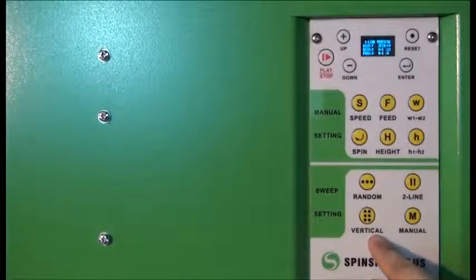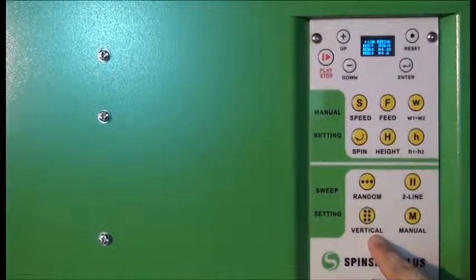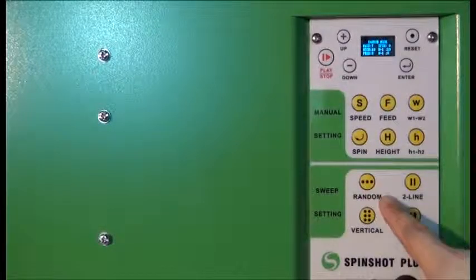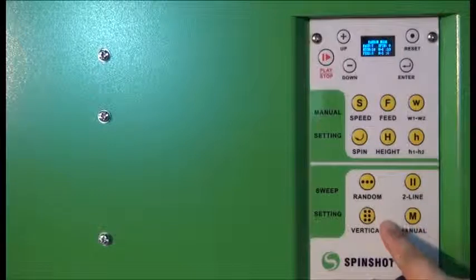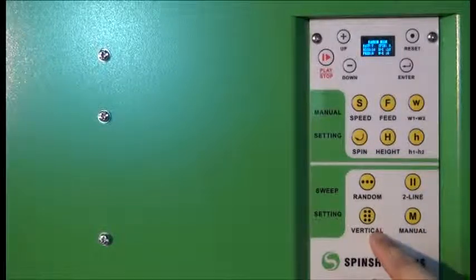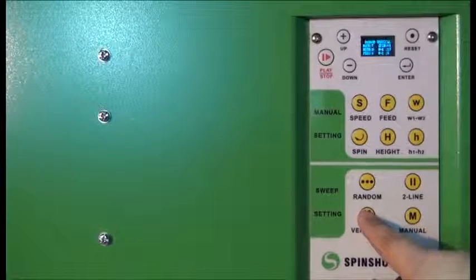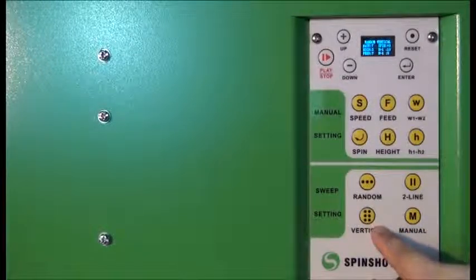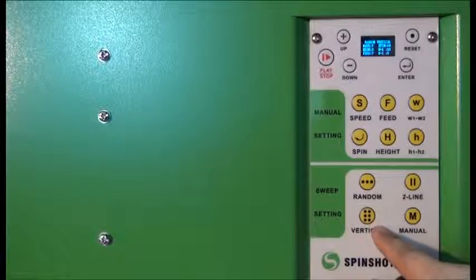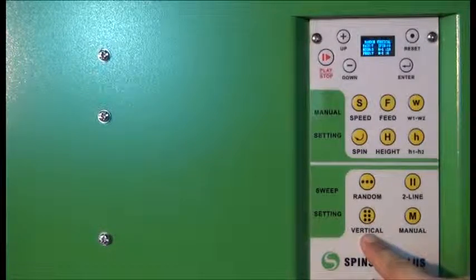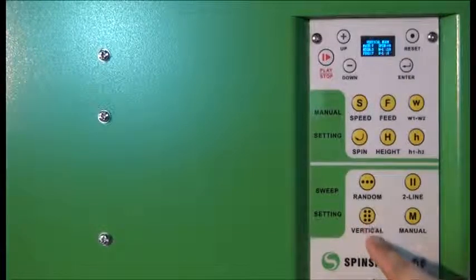If you want to go back to the random mode, you press the random here. If you want random two-line vertical, you press the random and then the vertical button here. To go back to the vertical mode, you then press the vertical button again here.